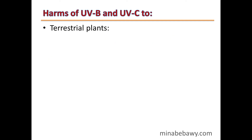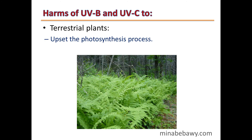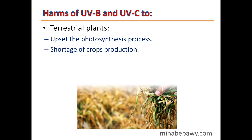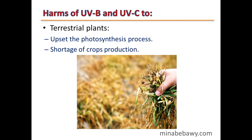Harms of UVB and UVC to terrestrial plants: they cause the upset of the photosynthesis process, and finally a shortage of crop production.